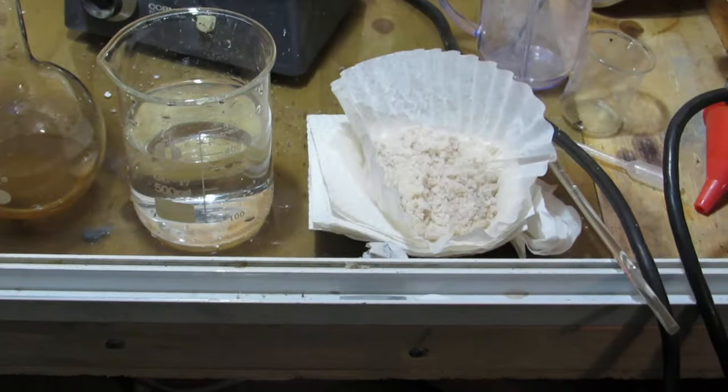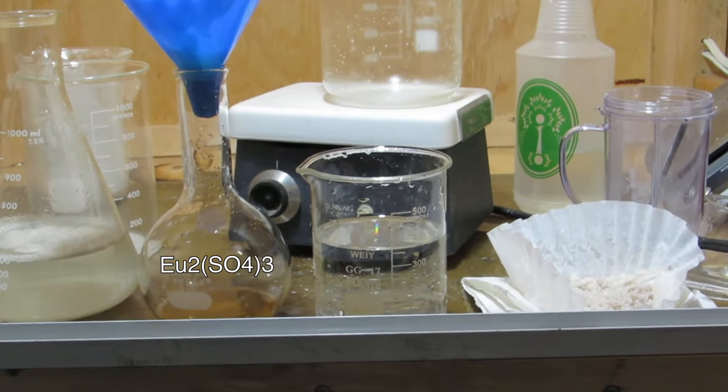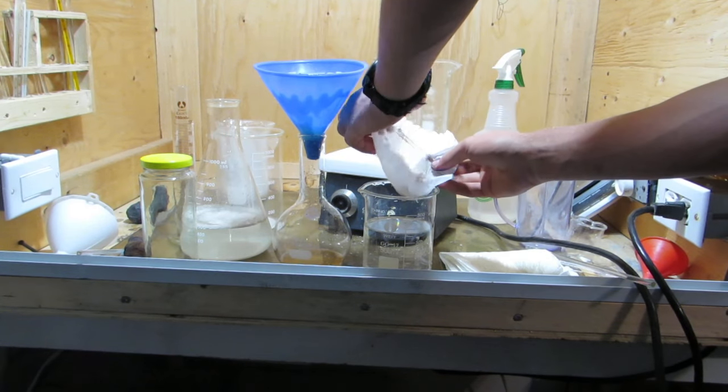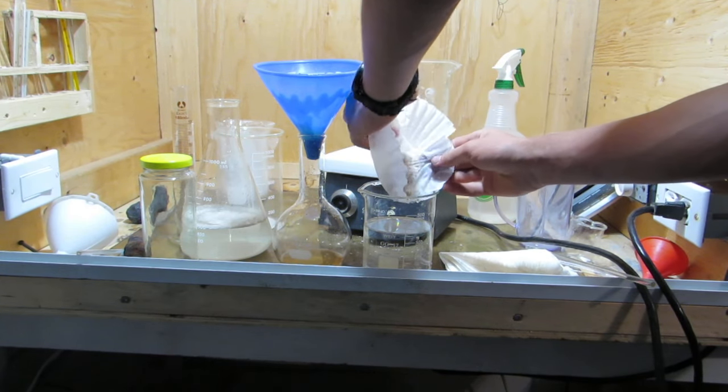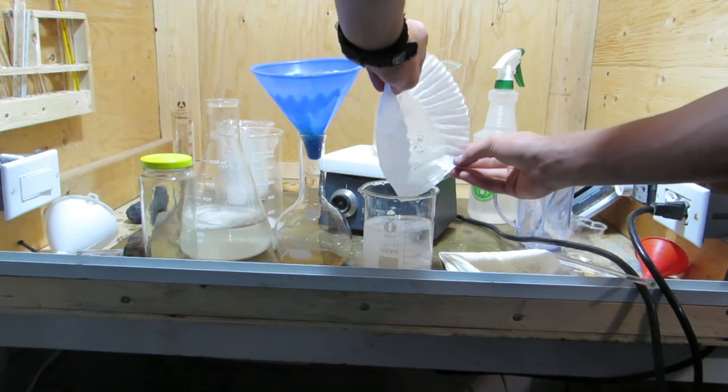After the filtration, the yttrium sulfate was an off-white color, and a yellowish solution of europium sulfate remained. The europium solution was boiled down and set aside to be processed in a future project, and the yttrium sulfate was added to 350 milliliters of cold distilled water to redissolve it.